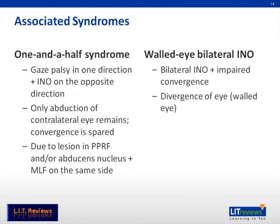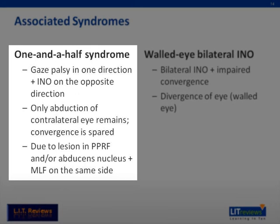Other syndromes associated with INO include the one-and-a-half syndrome, where both the PPRF and the MLF on the same side are affected. As the PPRF is the lateral gaze center, there is gaze palsy towards the side of the lesion and an INO on looking to the opposite side. The only movement of lateral gaze to both sides is abduction of the contralateral eye. Of note, convergence remains normal.